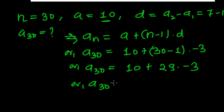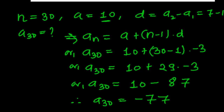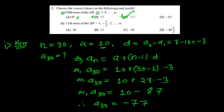So a30 equals 10 plus 29 times minus 3. Now 29 times 3 is 87. Therefore a30 equals 10 minus 87, so it is minus 77. Let me check the choices — this is not, this is not, this is also not — yeah, minus 77, we got the value. So we got the answer.